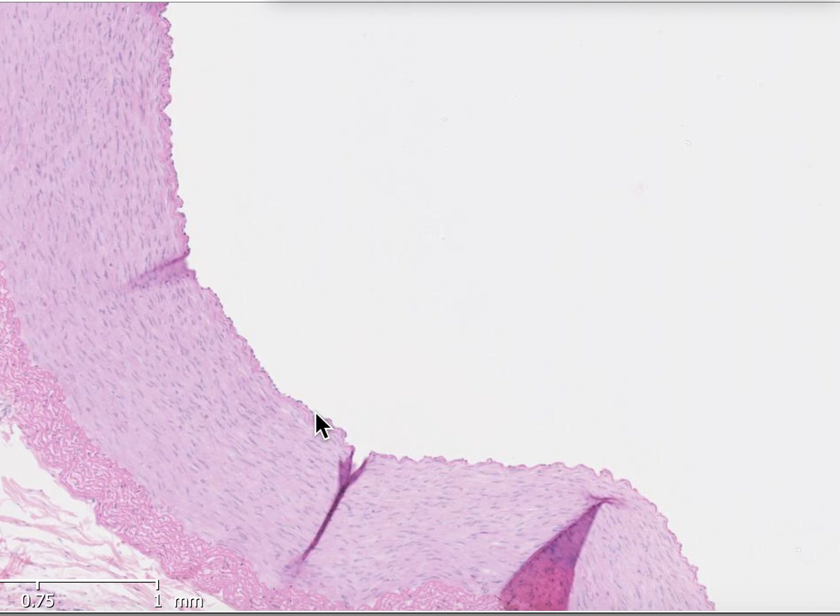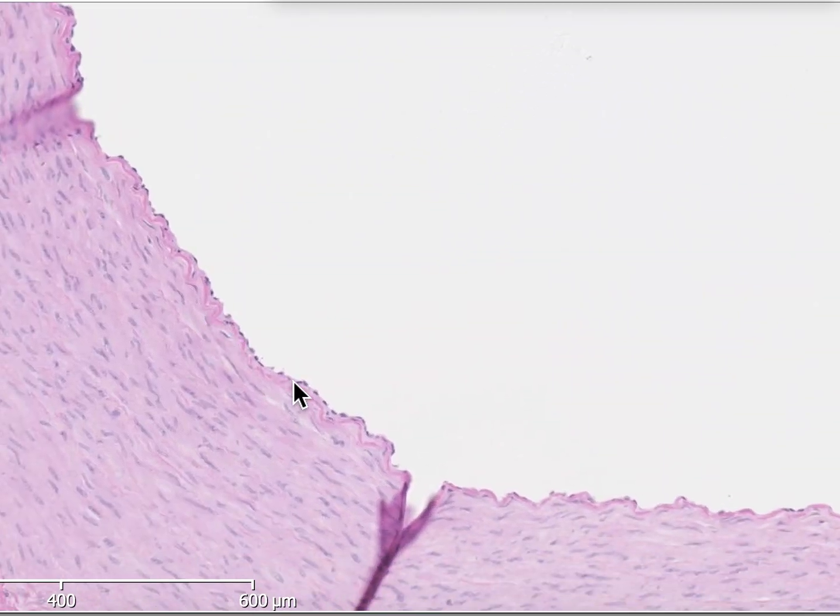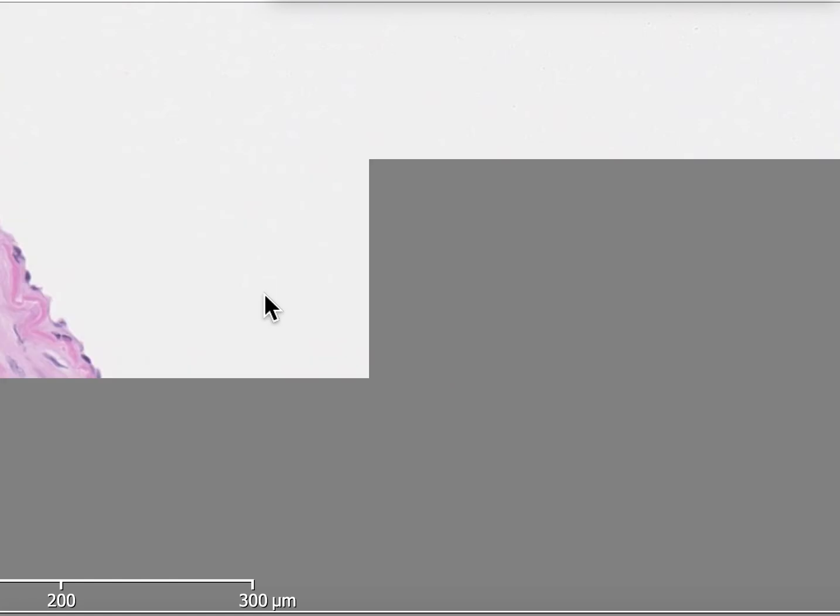resolve them, right? So we have to increase the magnification again. Now we can see the cells: flat nucleus, no clear cytoplasm. We can see here. Again, I want to increase the magnification.